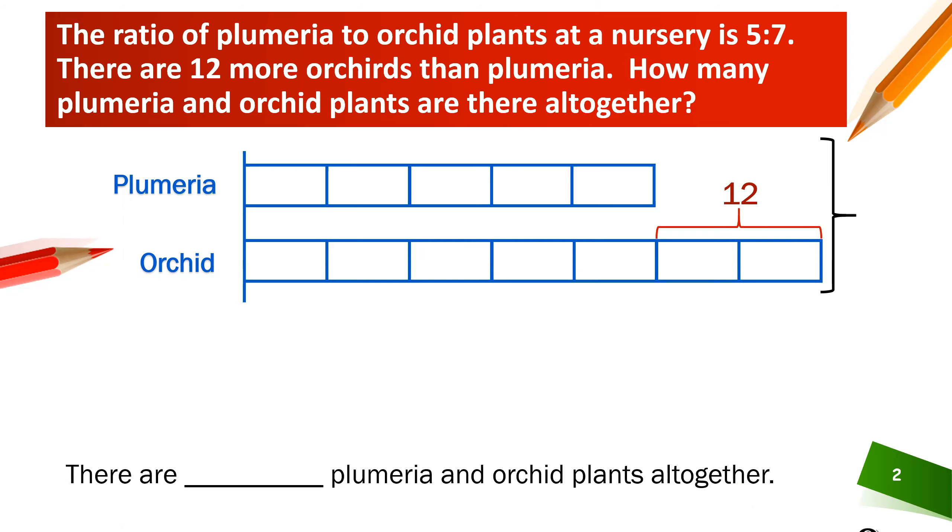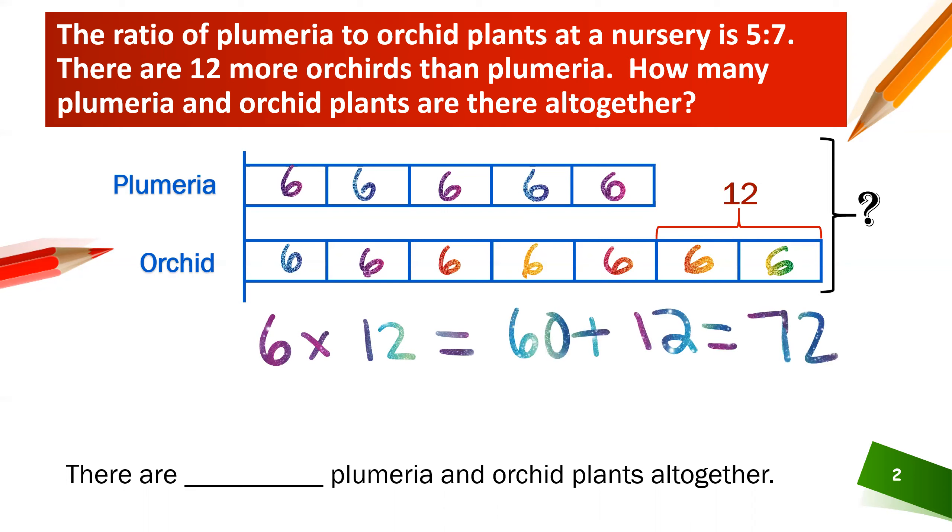The question is asking how many are they all together? Well once the model drawing is put on there we can easily see that 12 represent two small units so each unit must be 6. So all of these units are 6 each. So then we would say in total you have 12 parts and each part is 6 units. Therefore the total is 60 plus 12 which is 72. There are 72 plants all together. Nice.